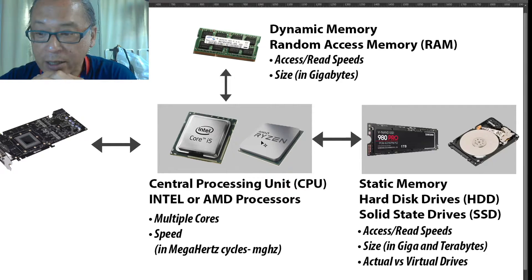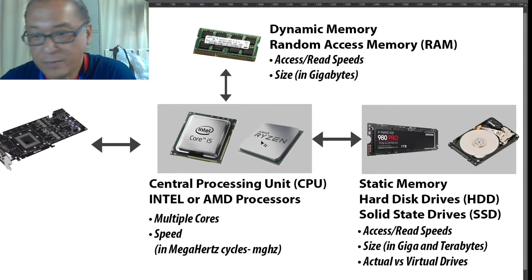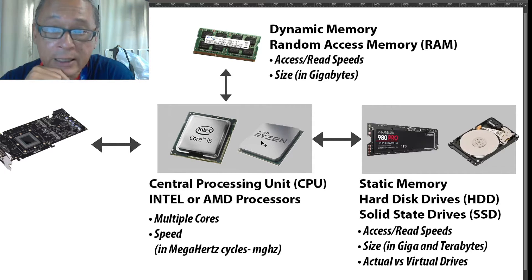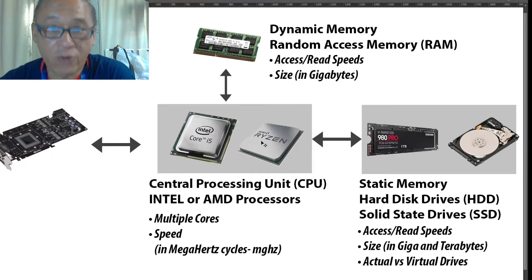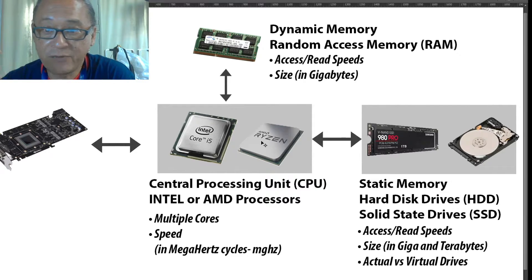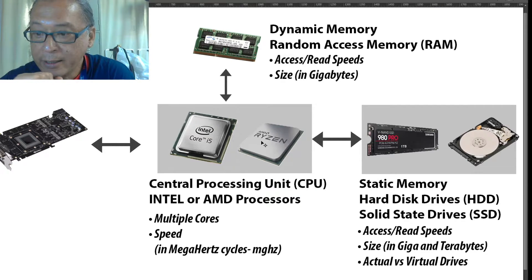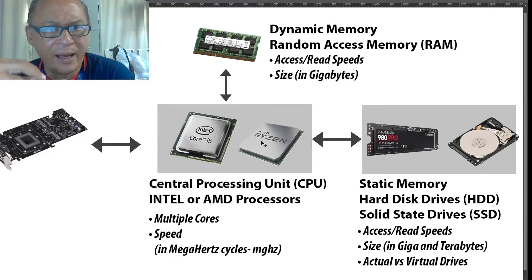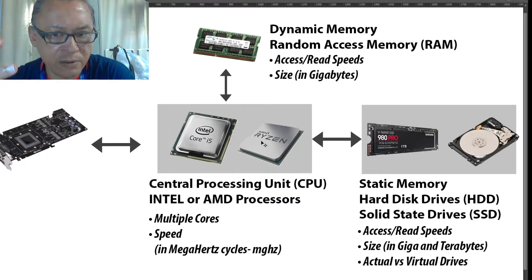That form is called software or computer programs, and those programs are stored in your hard disk. If you have a computer, you will know what a hard disk is — it is your C drive, D drive, or E drive. Today I'm going to explain what a hard disk is, how to get a good one, and what makes a hard disk efficient.